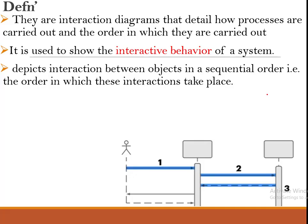It shows the interaction between objects, and those objects operate in a sequential order based on how the interactions are taking place. In this example, we have an actor and objects. There is interaction from the actor to the first object, from the first object to the second object, and from a third object back to the second object. The interactions happen in a sequential order with time gaps between each activity.